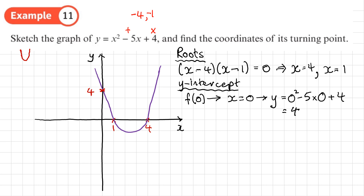There's one more thing to work out: the minimum point of this U-shaped quadratic. If it were N-shaped, we'd be finding a maximum. To find the minimum, we complete the square on the function.